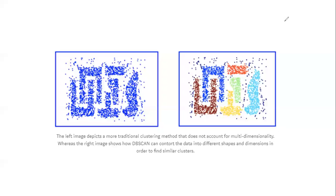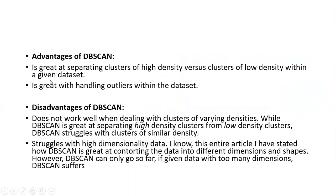The advantages of DB scan: it is very great at separating clusters of high density versus low density, because we consider both epsilon and minimum points within the boundary. It also handles noisy points and outliers very well. Disadvantages: it does not work well with clusters of varying densities. It also struggles with high-dimensional data — as the number of dimensions increases, it becomes very difficult to group data using density-based clustering.